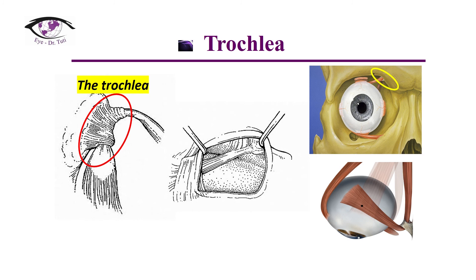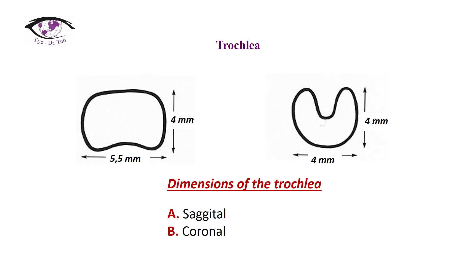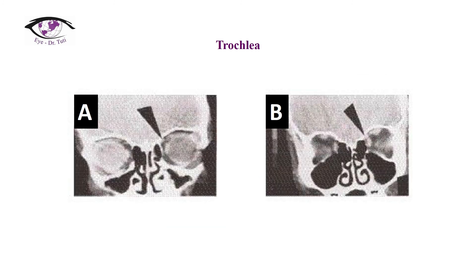The trochlea is another part of the superior oblique muscle system, attached to the medial orbital wall, with the tendon entering and exiting through it. Several photos clearly show the trochlea with its sagittal and coronal dimensions and specific parameters. A CT scan shows the trochlea on the left side and an absent trochlea on the right eye.